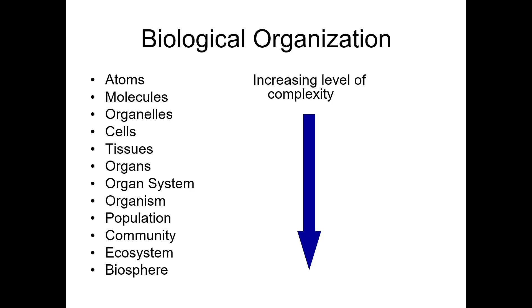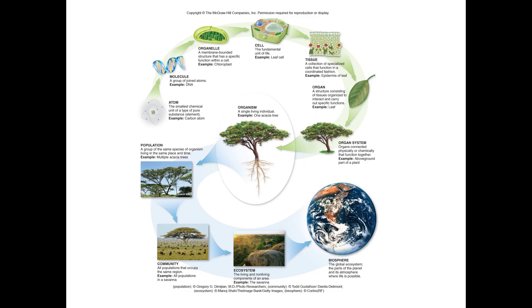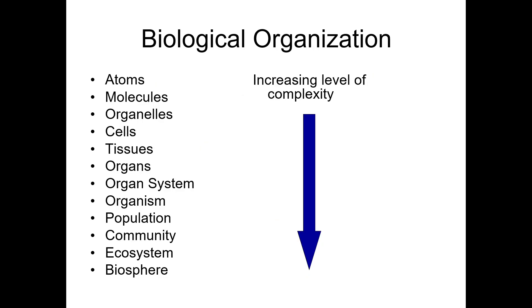The second question on biological organization is an application question — I give you an example and you identify what level of organization it represents. These examples come straight from your book and from the lecture, so make sure you've listened to the lecture and read the relevant book sections. Examples include chloroplasts as an organelle of plant cells, or a leaf as an example of an organ. Many answers are right in front of you in the diagram, so make sure you can define each level and know the examples discussed in lecture.